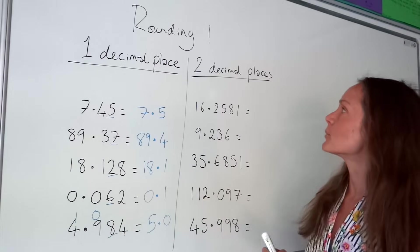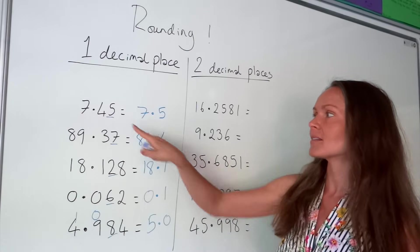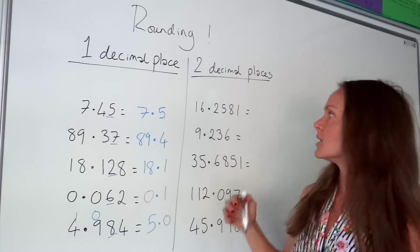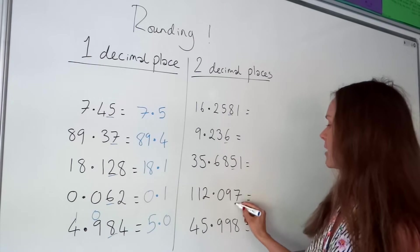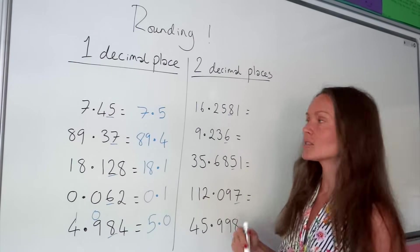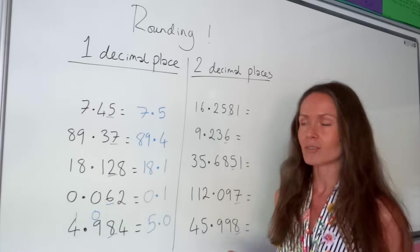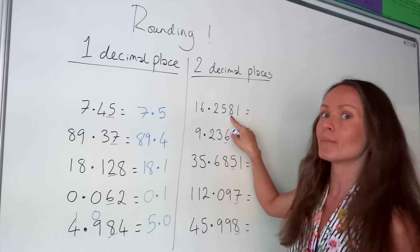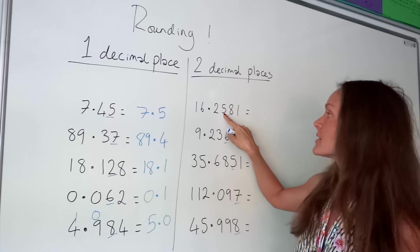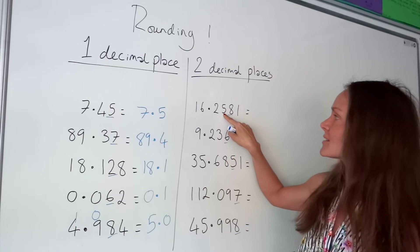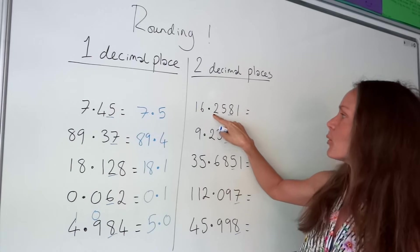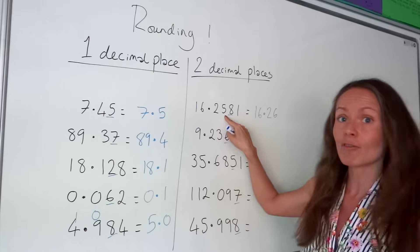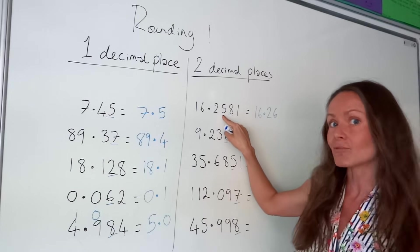Now, when we're rounding to two decimal places, we don't check the second digit after the decimal anymore — we check the third one. So we're looking at this number here to see if it rounds the one next to it up or not. In this one, the third number is bigger than 5, which means we round up, so this number changes to 6. So we're left with 16.26 — everything else stays the same, it's just the digit directly next to the number 8 that gets rounded.